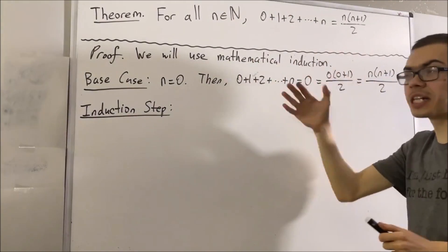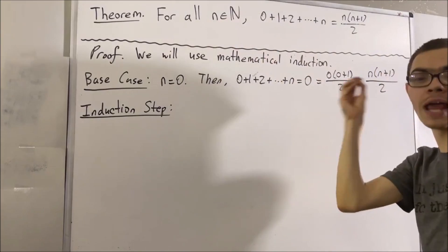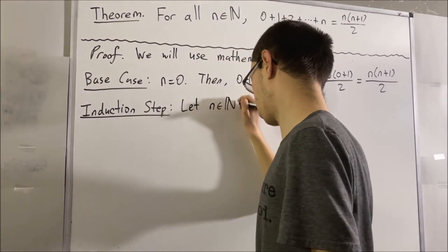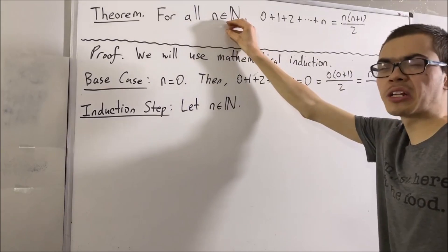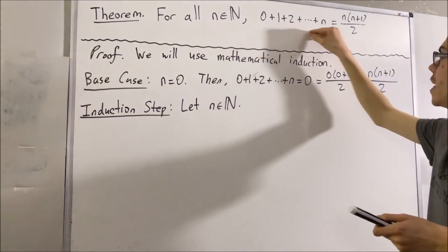Now, if you recall, in the induction step, what we do here is we pick out an arbitrary natural number n. And we're assuming that the arbitrary natural number n that I picked out was one where this equality holds.